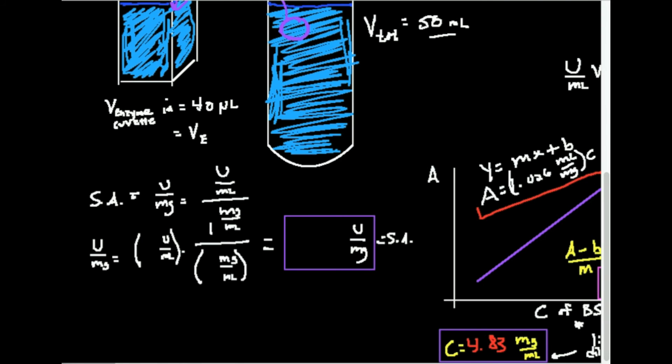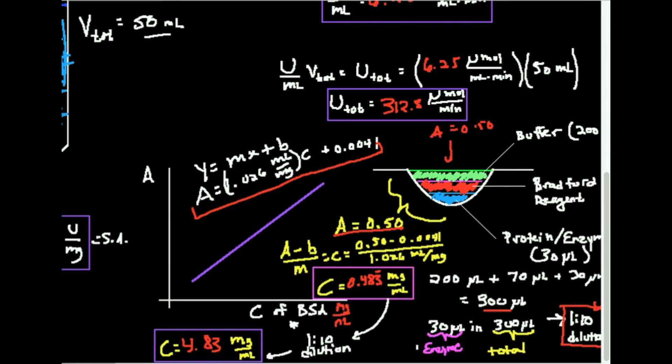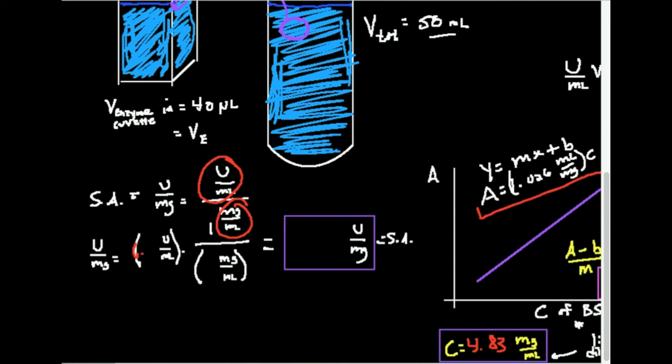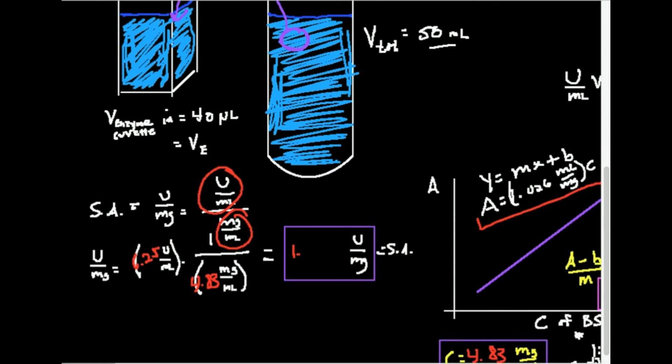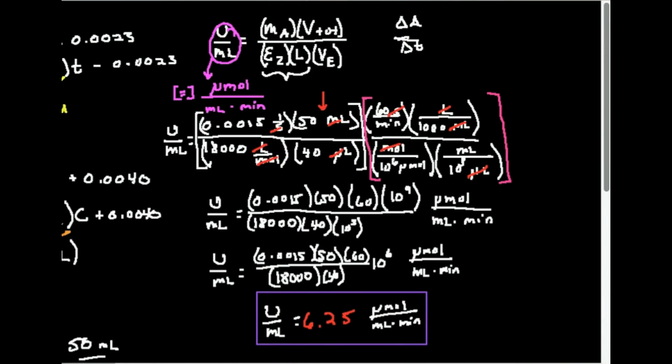Now calculate specific activity. I'm going to take the u per mil I just got, divided by the concentration I just got. So what's my u per mil that I had in one of the previous steps? It was 6.25. The concentration was 4.83. So I'm going to take 6.25 divided by 4.83. And I get the specific activity is about 1.29. And it's activity per milligram or u per mg. And that is the specific activity of my protein.